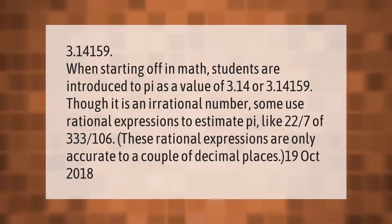3.14159. When starting off in math, students are introduced to pi as a value of 3.14 or 3.14159. Though it is an irrational number, some use rational expressions to estimate pi, like 22/7 or 333/106. These rational expressions are only accurate to a couple of decimal places. 19 October 2018.